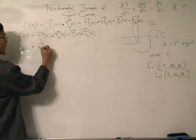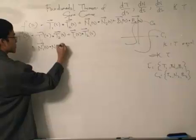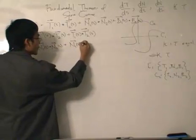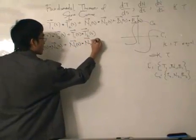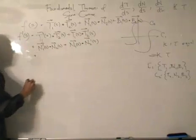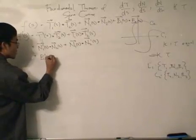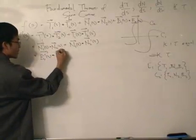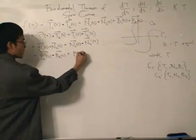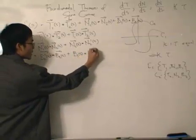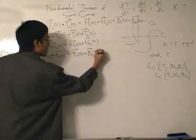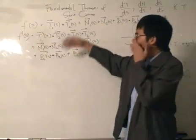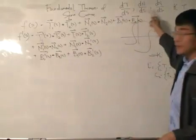So for each pair: differentiate the first, keep the second; then keep the first and differentiate the second; and dot them together. It is out of perseverance that we can really prove the formula. Now, for the vectors T, N, and B that are being differentiated, we're going to substitute using the Frenet equations.